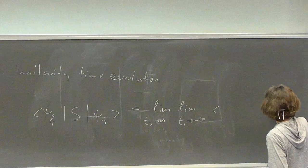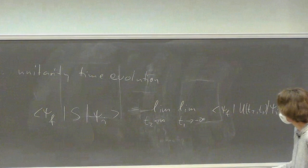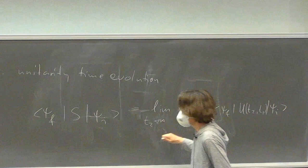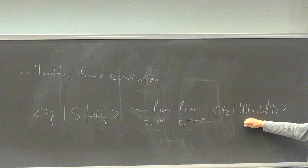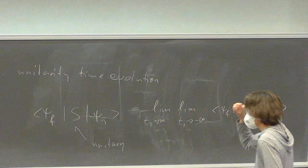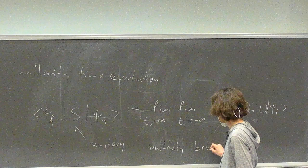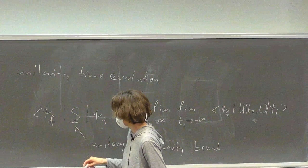We think about a reaction: an incoming state starts far away from the target, a final state goes to infinity. This is described by our time evolution operator, which we know is unitary, so we have an S matrix that is also unitary. Because the S matrix is unitary, there are constraints on scattering observables — what are called unitarity bounds.